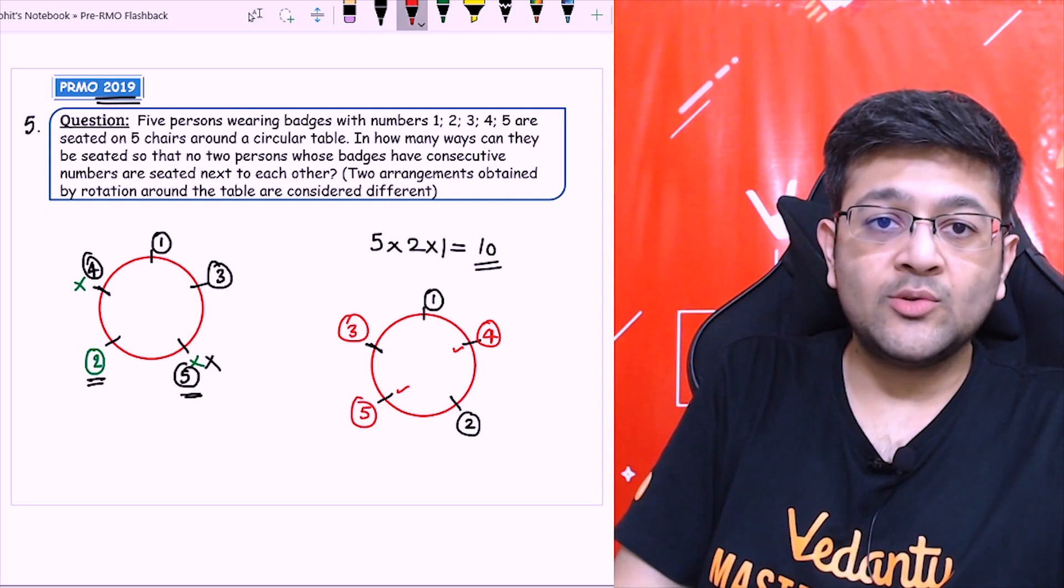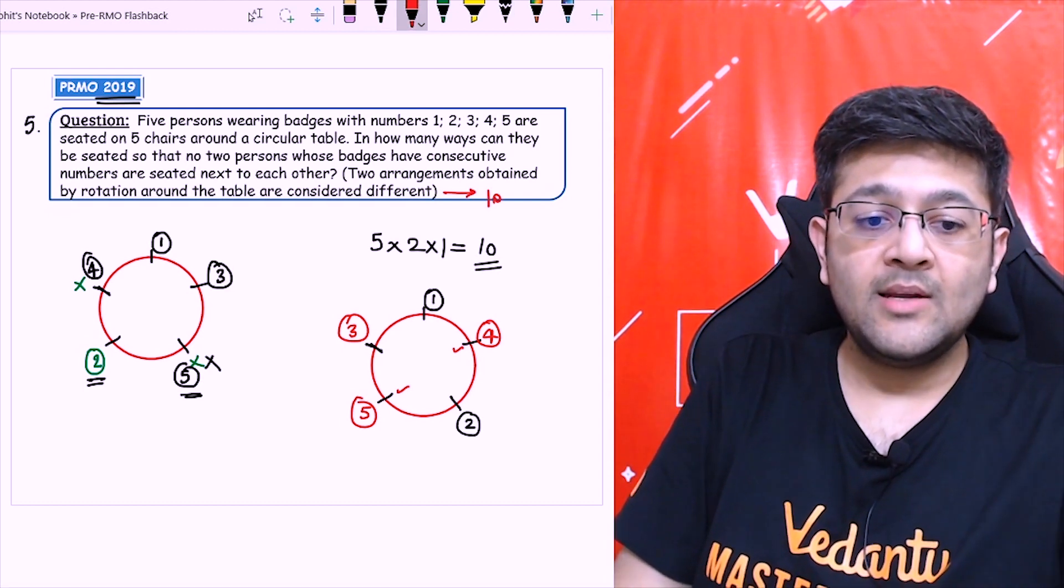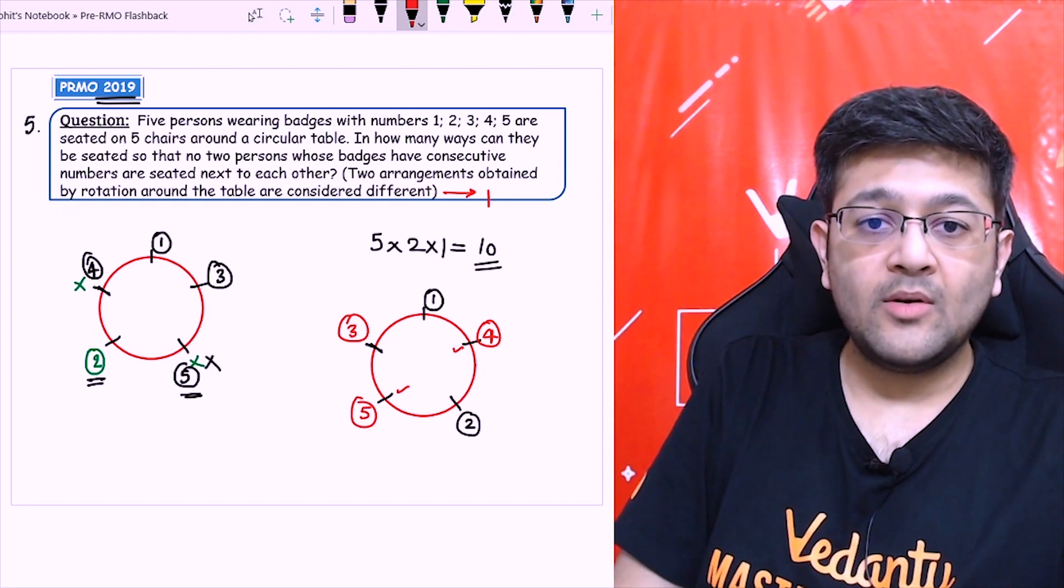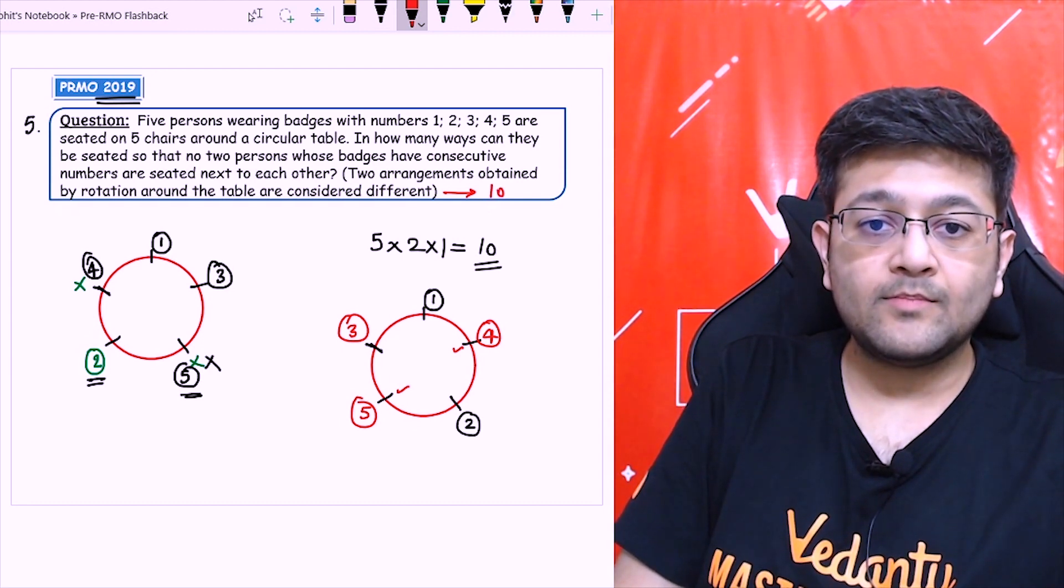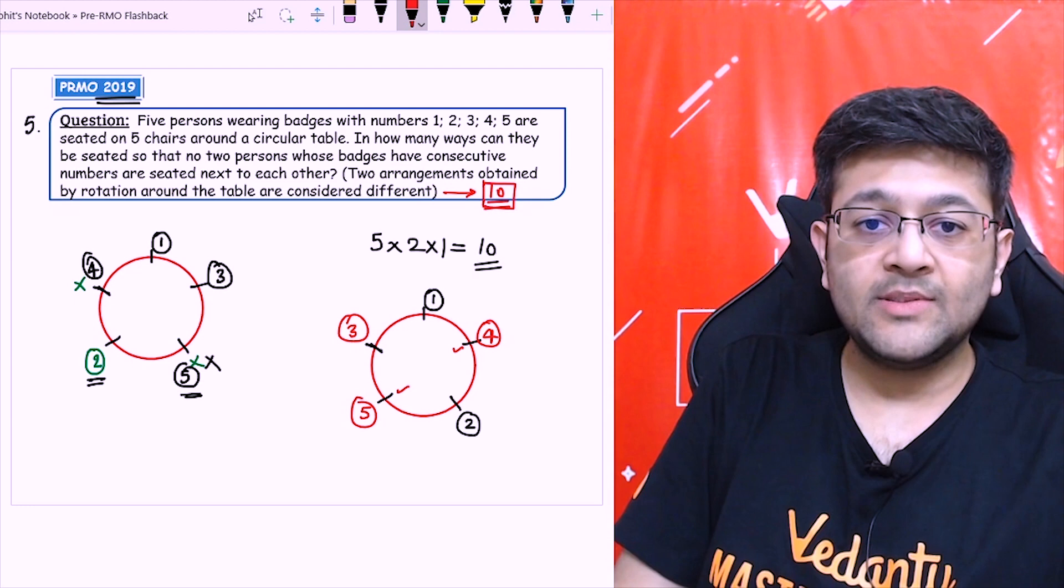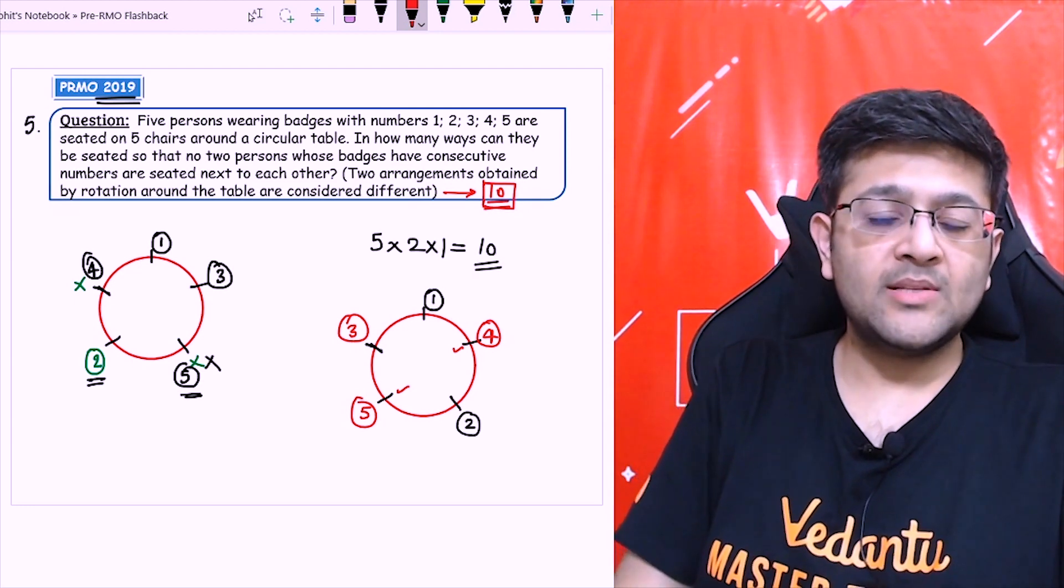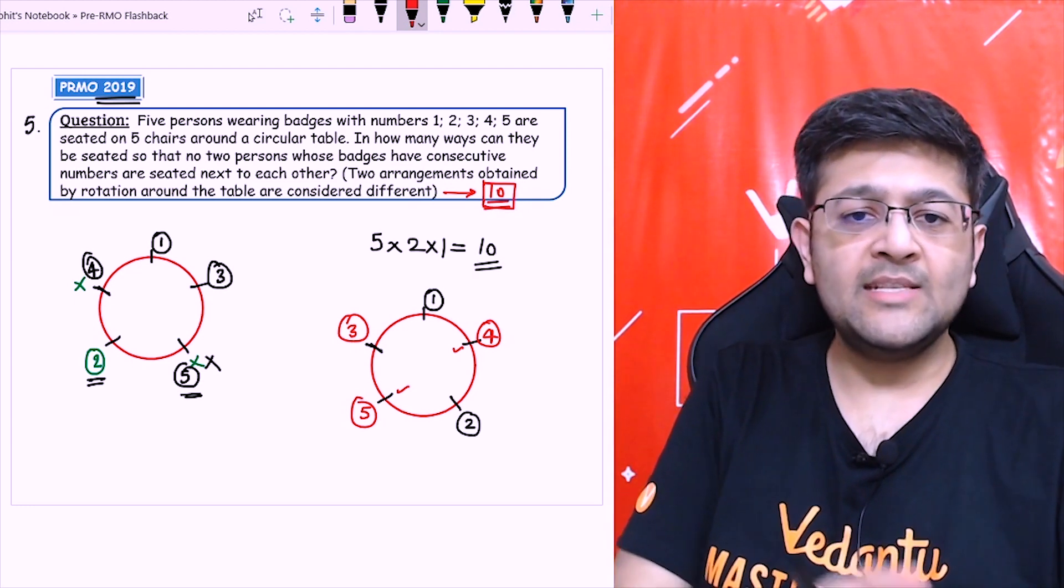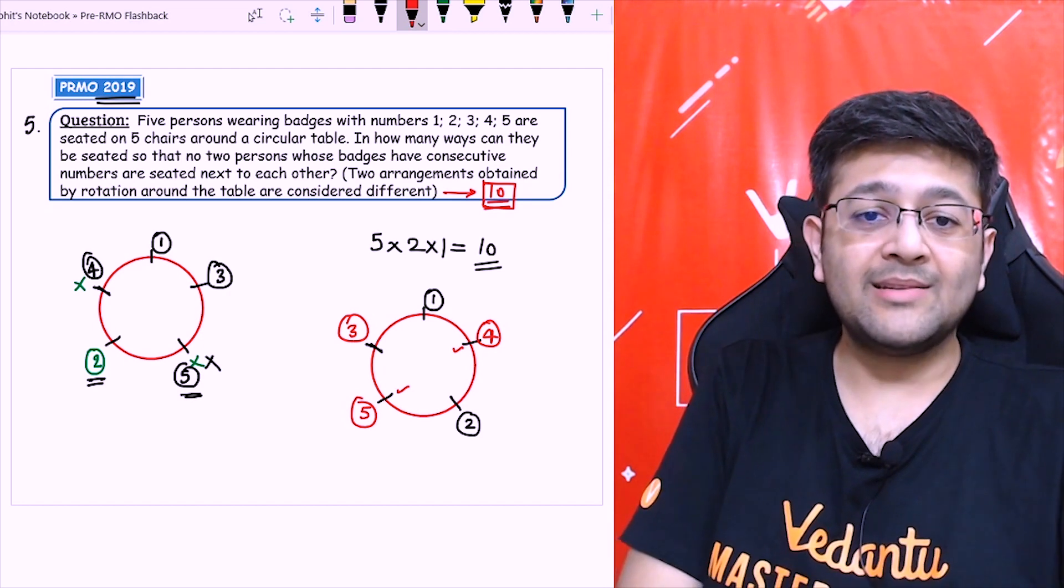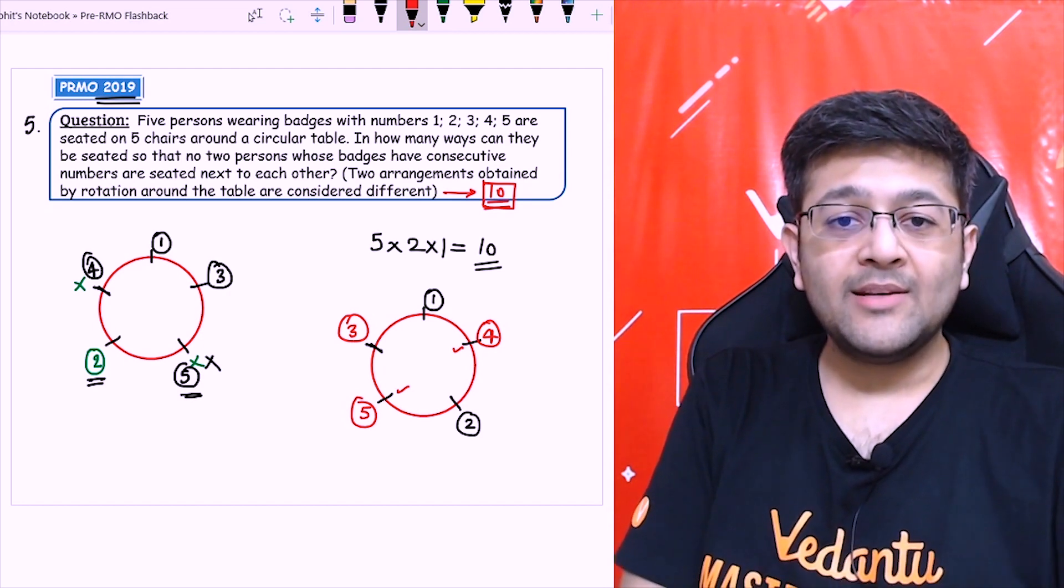So 5 into 2, that will be equal to 10. So the answer for this question should be 10 ways to arrange them on a circular table. That should be the answer. I would say this question from Combinatorics is one of the easiest one which has come in the test.